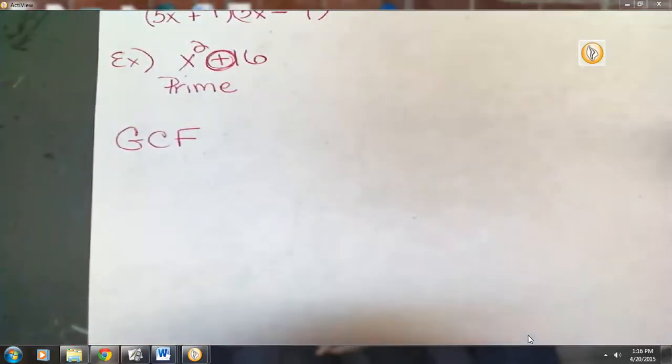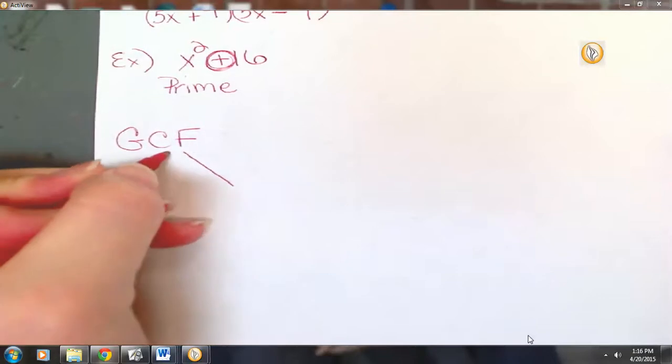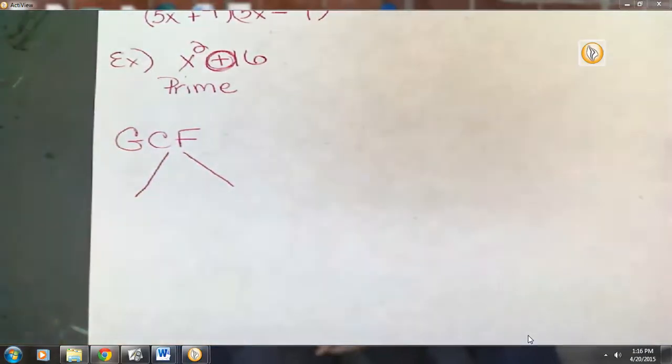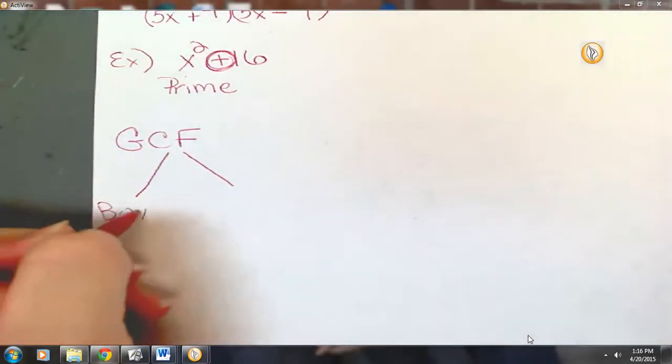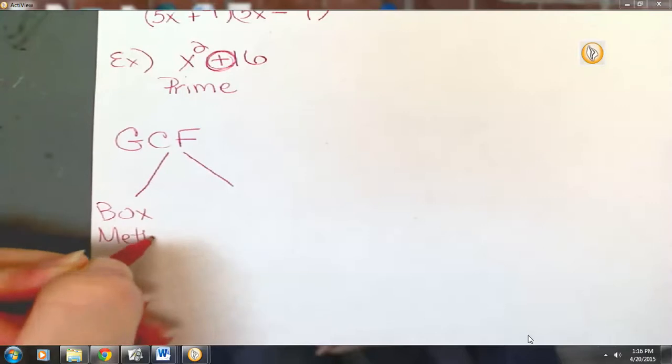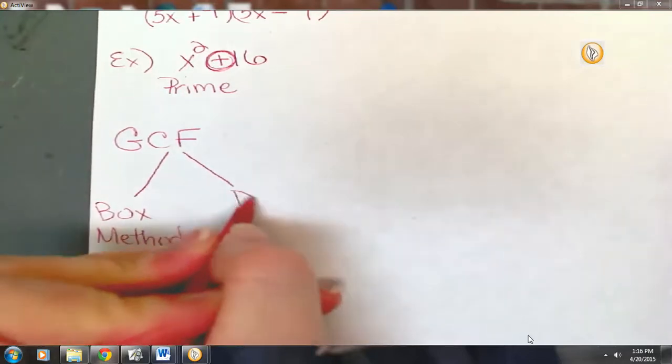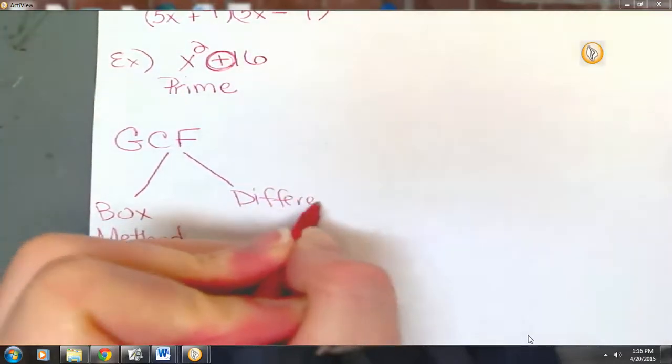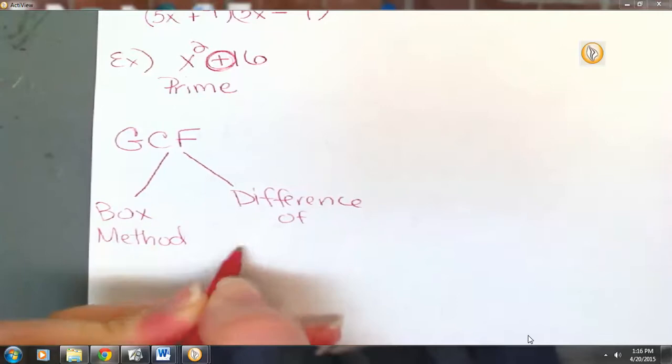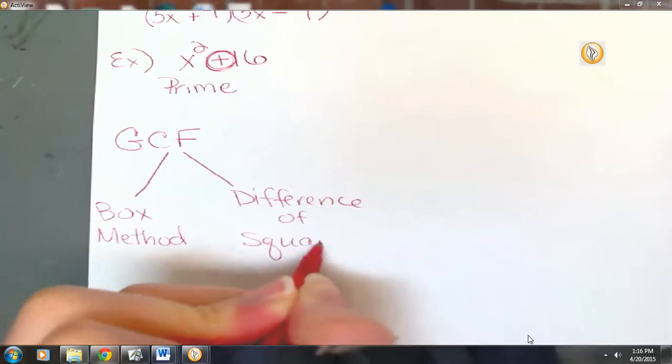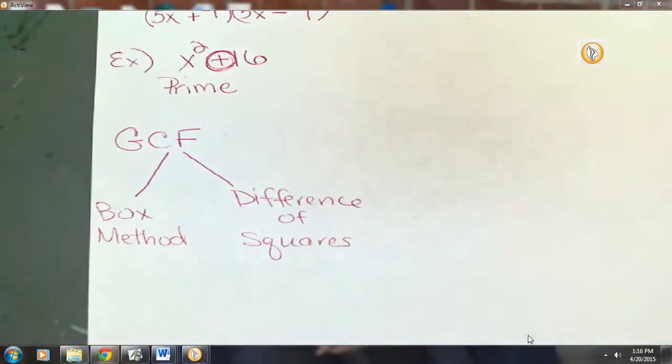That's kind of our go-to. That's number one. Once we have tried greatest common factor, we've got two options. We could try box method. And now we may use difference of squares. So greatest common factor is always the number one pick. From there, if you've got three terms, you might try box method. If you've got two terms, you might try difference of squares.